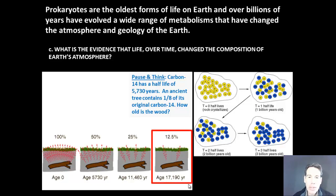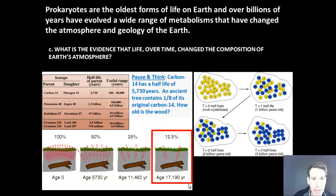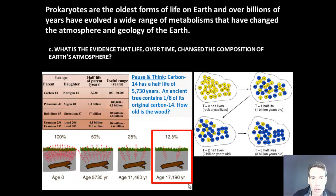If you said 17,190 years old, you are correct. That's because if it has one-eighth of its carbon-14, that is 12.5% of the original carbon-14 remaining. We can also look at other types of radioisotopes such as potassium-40, rubidium-87, uranium-238, and uranium-235 to date things — ranging from thousands of years old to millions or even billions of years old. This form of dating is called radiometric dating.